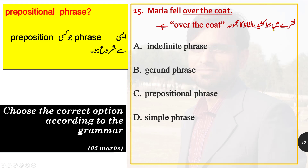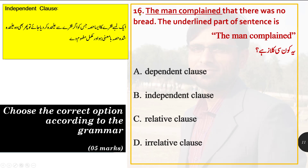Option number 15: 'Maria fell over the coat.' The underlined phrase 'over the coat' — what is it? An indefinite phrase, gerund phrase, prepositional phrase, or simple phrase? A prepositional phrase is one that begins with a preposition. Here 'over' is a preposition, so 'over the coat' begins with a preposition and is therefore a prepositional phrase.